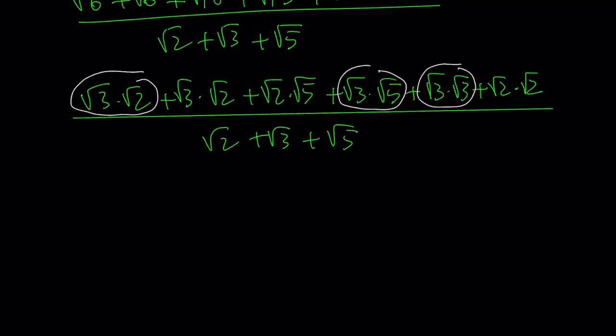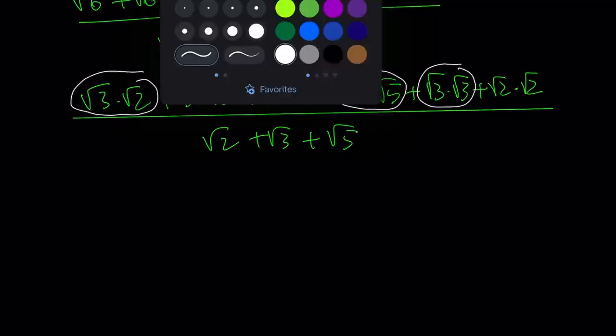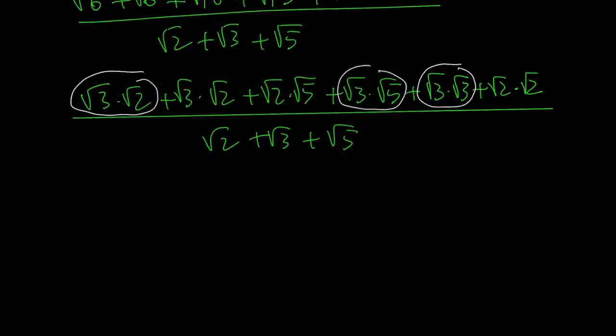When you're picking terms for factoring by grouping, you want to make sure they have a common factor. Otherwise there's no point. Notice that the rest has the same type of feature, so we can safely say we have root 2 in common, root 2 in common, and root 2 in common. That's good. Let's go ahead and proceed.